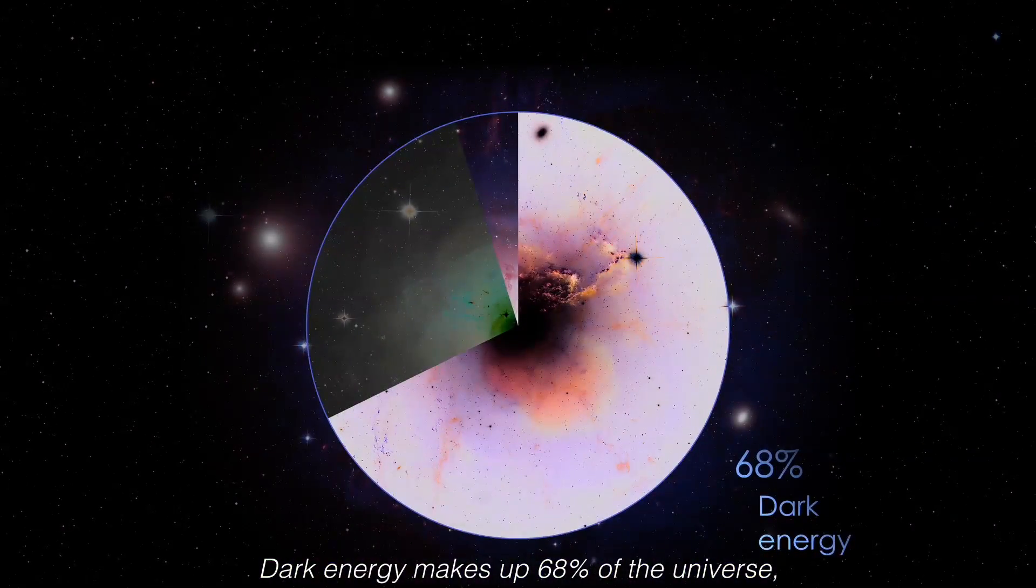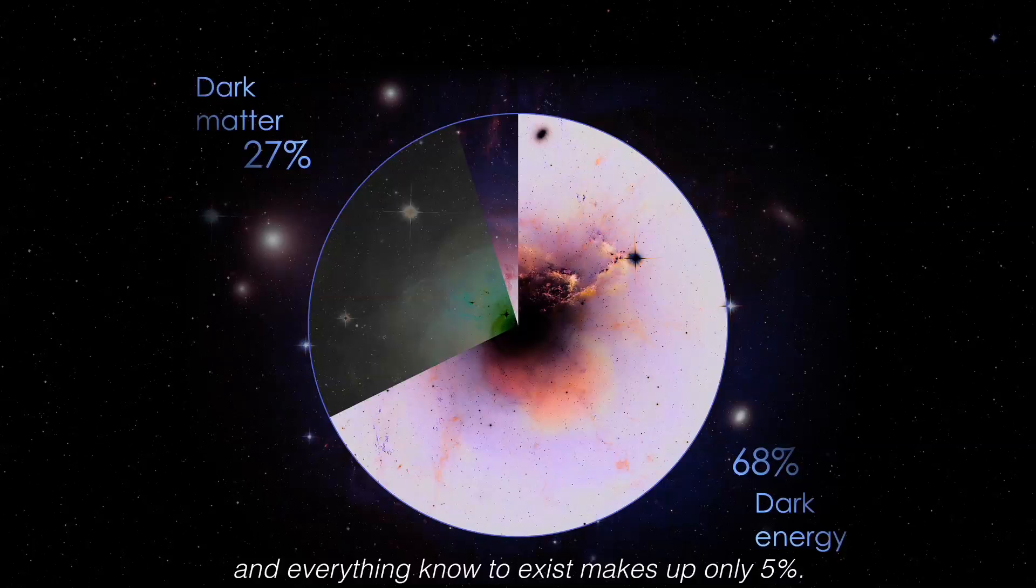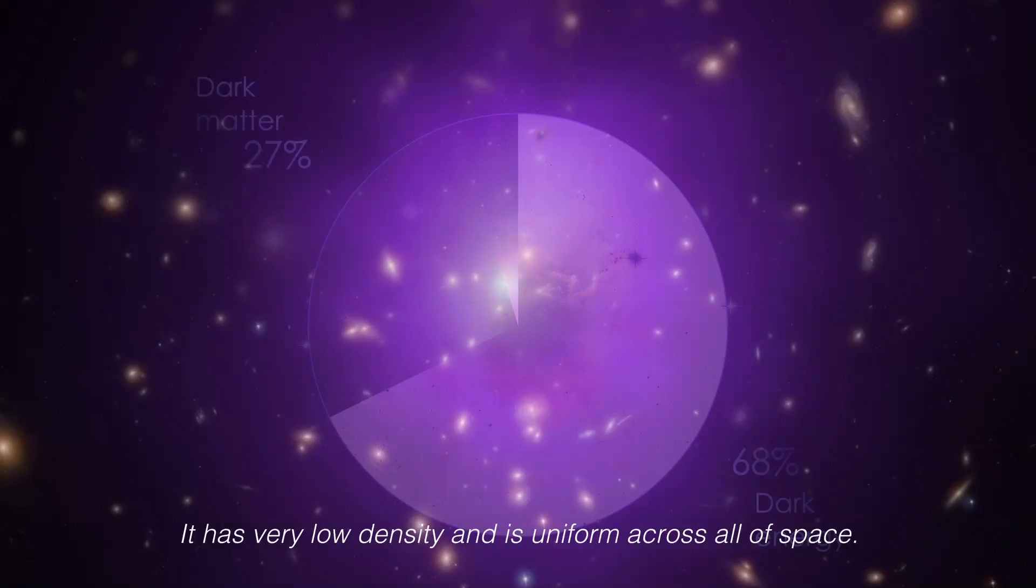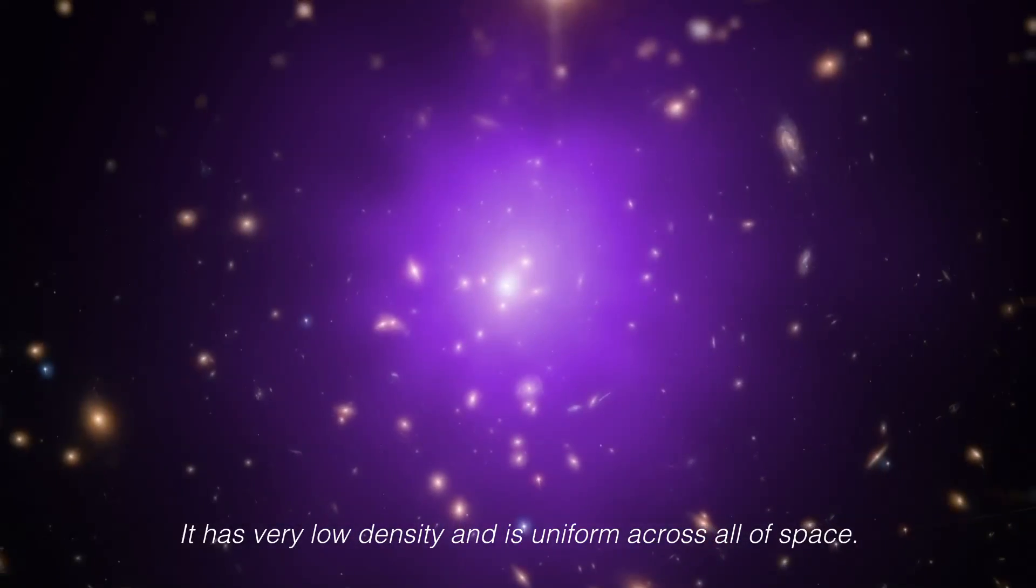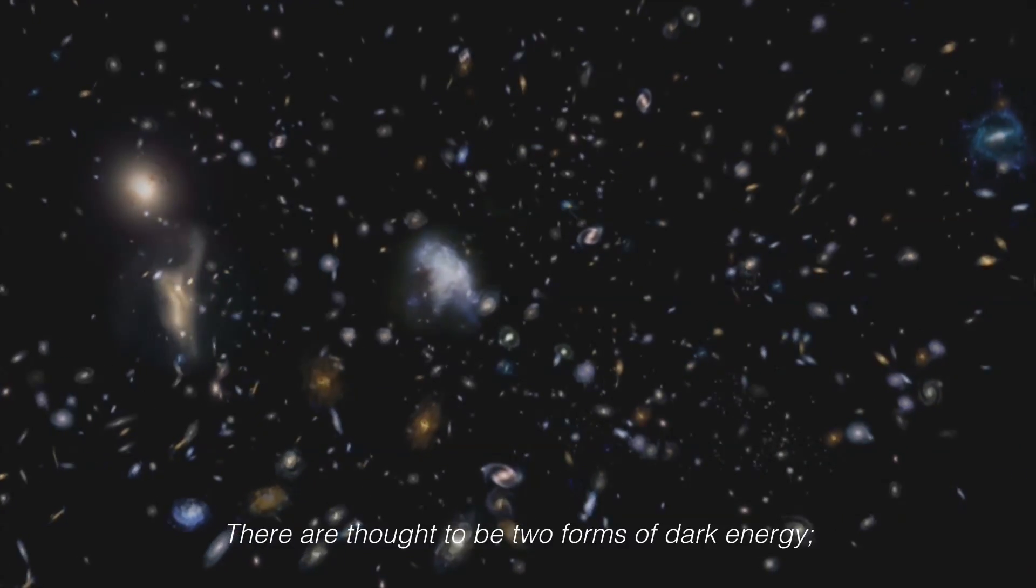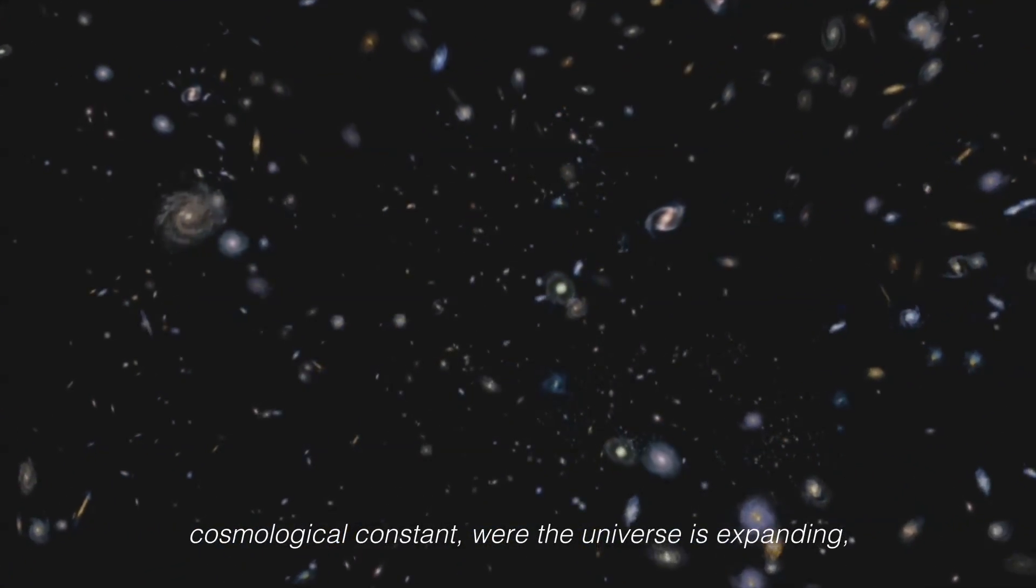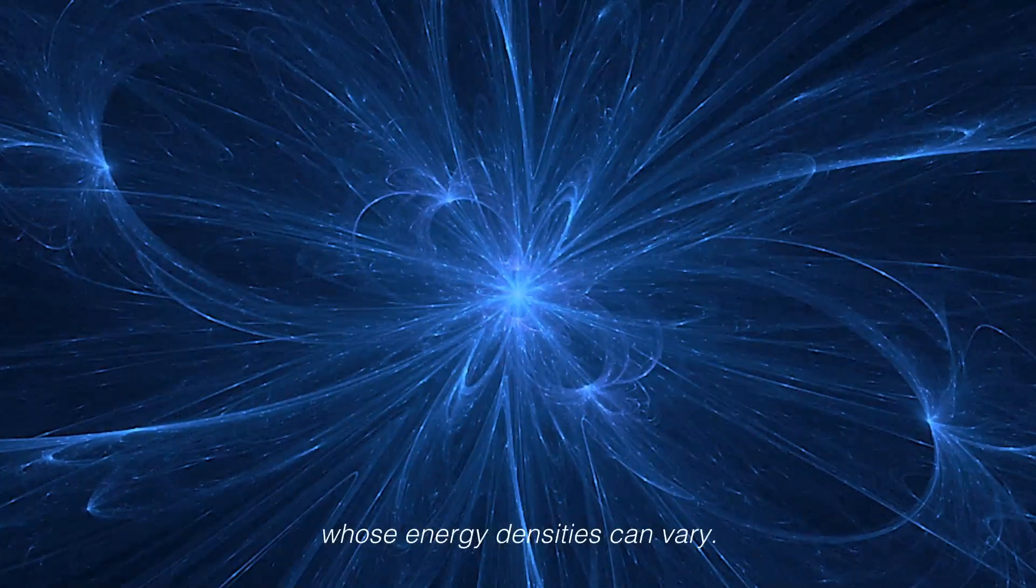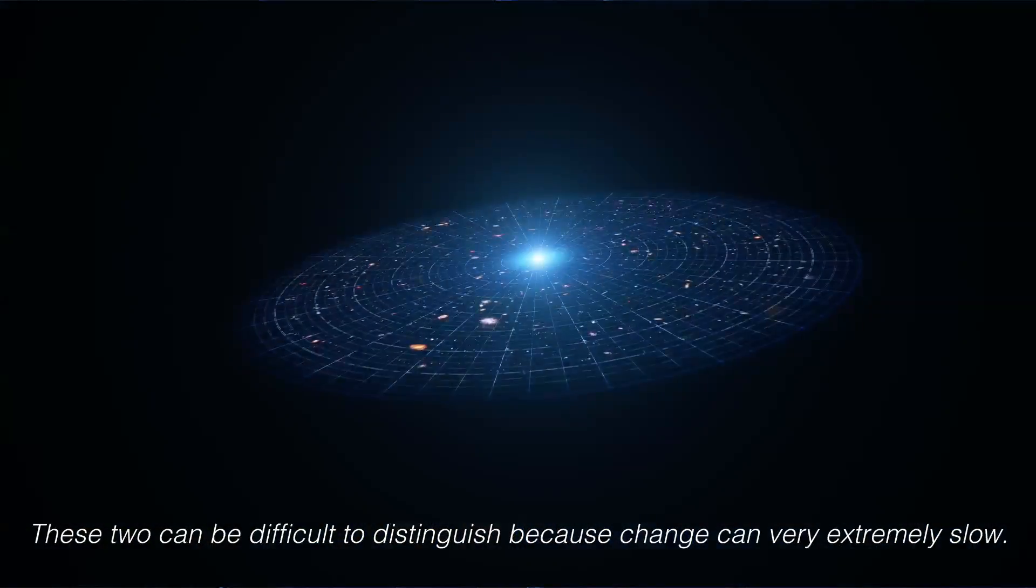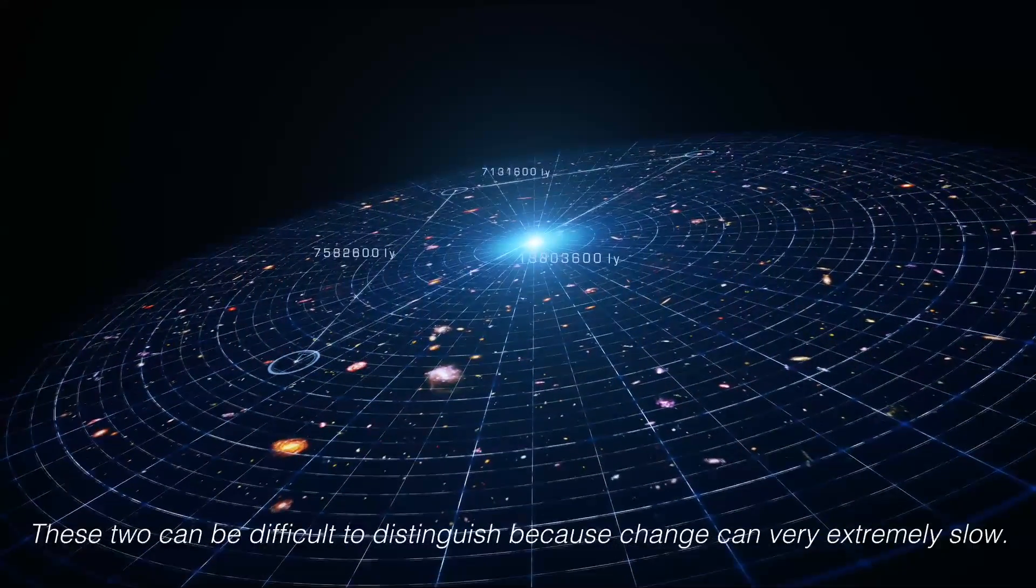Dark energy makes up 68% of the universe, while 27% is dark matter, and everything known to exist makes up only 5%. It is very low density and is uniform across all of space. There are thought to be two forms of dark energy: cosmological constant, where the universe is expanding, and scalar fields, like quintessence and moduli, whose energy densities can vary. These two can be difficult to distinguish because change can be very extremely slow.